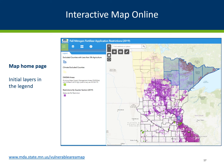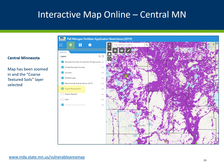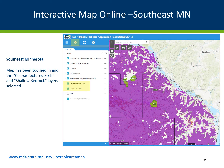The next slides are examples of the interactive map. The map has layers for coarse textured soils, shallow bedrock, and karst geology, shown in purple and designated by quarter sections. DWISMAs are also included on the map and are shown in green. This map shows central Minnesota with the coarse textured soils layer selected. This map shows southeast Minnesota with the coarse textured soils and shallow bedrock layers selected. You can also see the green drinking water supply management areas, which are easier to see at this scale.